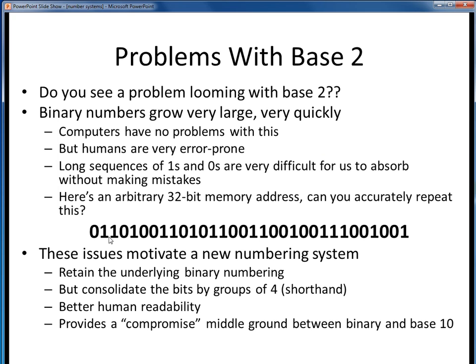Here's an arbitrary 32-bit binary number I made up. We could imagine this might represent some 32-bit memory address, for example. Do you think you could take a quick look at this and repeat it back accurately? Could you spot the one that's supposed to be a zero? I know I sure couldn't.